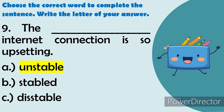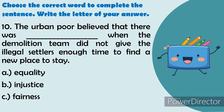Number 10: The urban poor believed that there was blank when the demolition team did not give the illegal settlers enough time to find a new place to stay. The answer is: injustice.